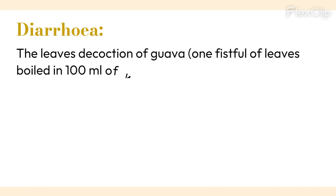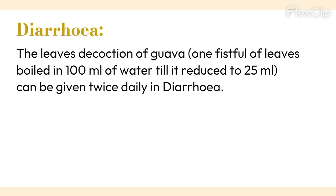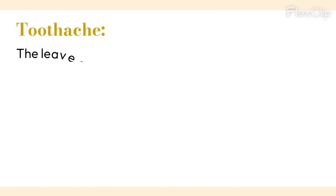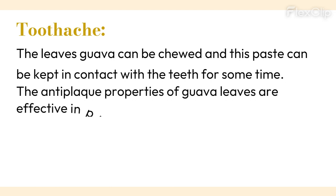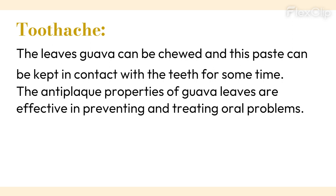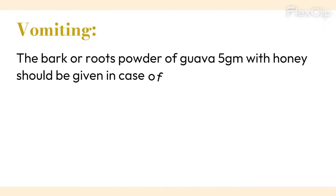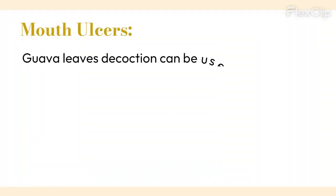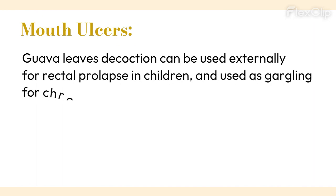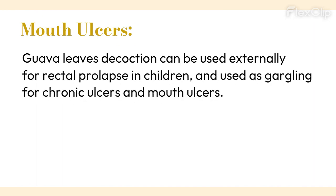1. Diarrhea: one fistful of leaves boiled in 100 ml of water until it reduces to 25 ml can be given twice daily in diarrhea. 2. Toothache: the leaves of guava can be chewed and the paste kept in contact with the teeth for some time. The antiseptic properties of guava leaves are effective in preventing and treating oral problems. 3. Vomiting: the bark or roots powder of guava, 5 grams with honey, should be given in case of cholera and vomiting. 4. Mouth ulcers: guava leaves decoction can be used externally for rectal prolapse in children, and used as gargling for chronic ulcers and mouth ulcers.